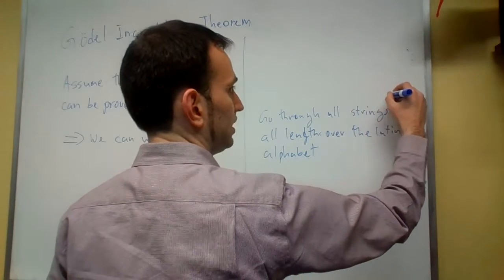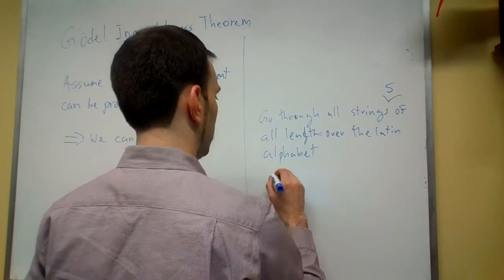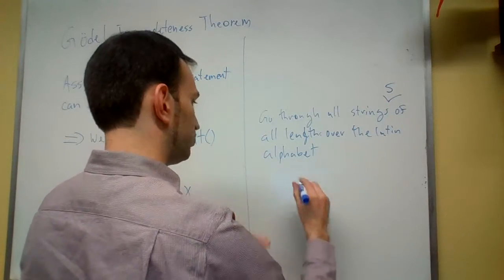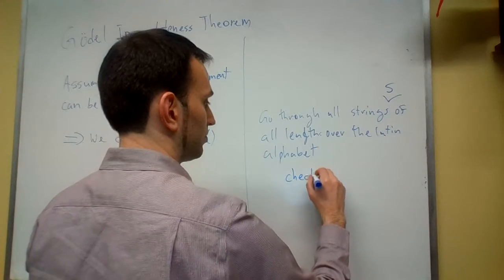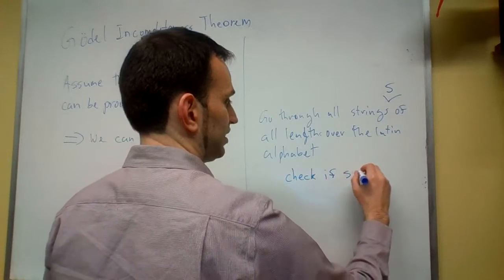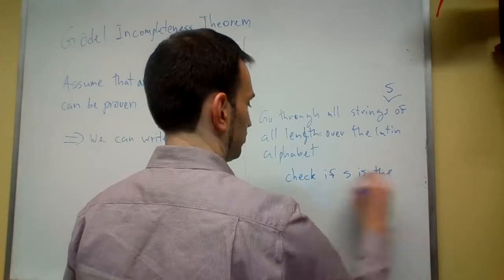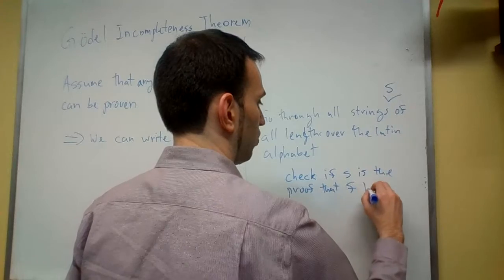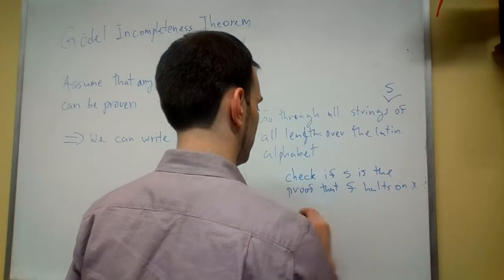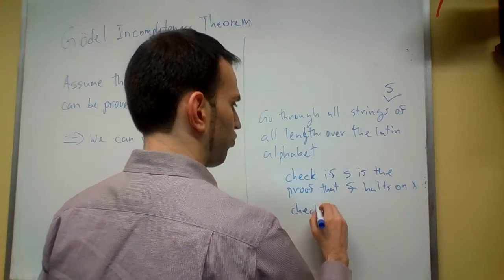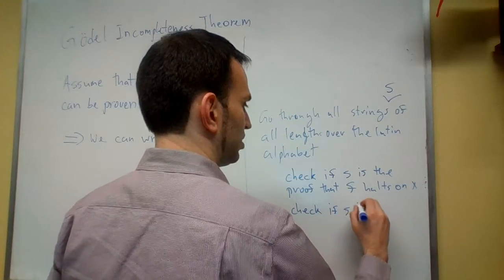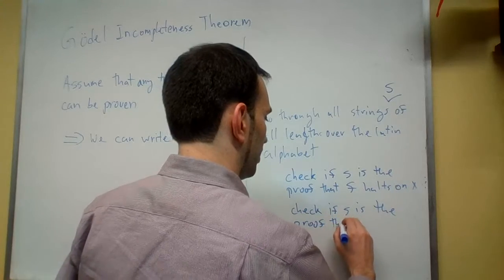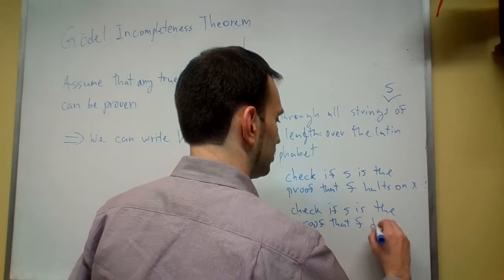So let's say that the strings are s. So here we have a for loop—we go through all the strings and we say check if s is the proof that f halts on x. Also check if s is the proof that f does not halt on x.